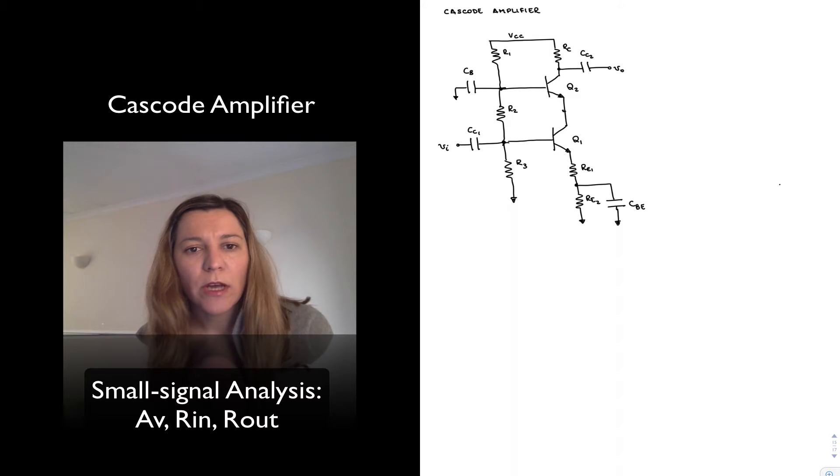Hello. We're going to take a look at another multi-stage amplifier. This configuration is called the Cascode amplifier. A Cascode amplifier consists of a common emitter stage followed by a common base stage.